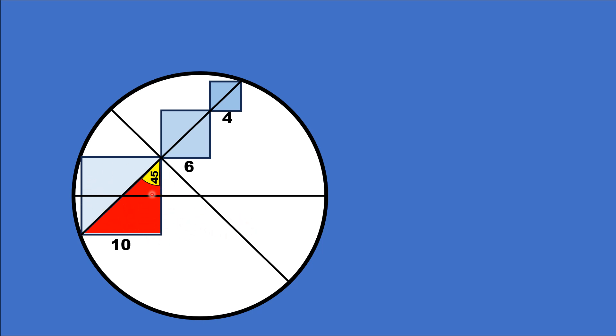We know that a diameter is always perpendicular to a chord of a circle. Since this line is a chord and this is the diameter, the angle at this vertex is 90 degrees.